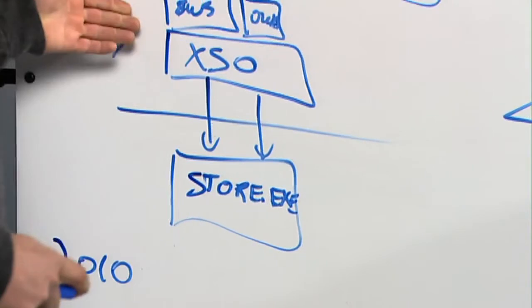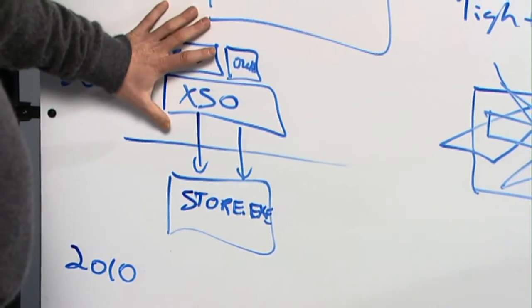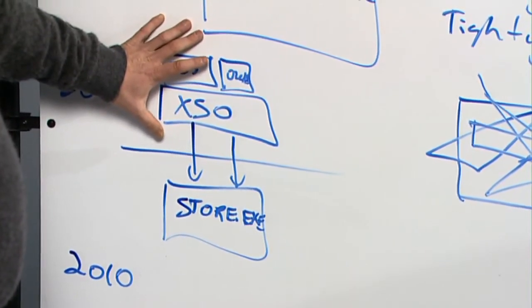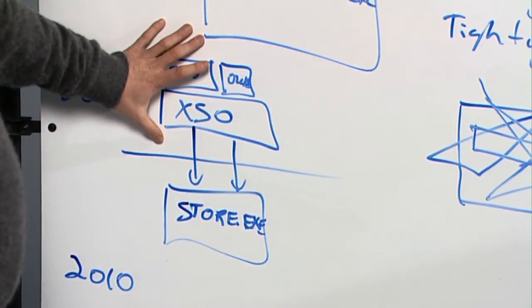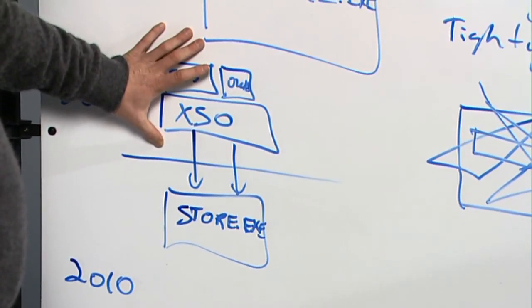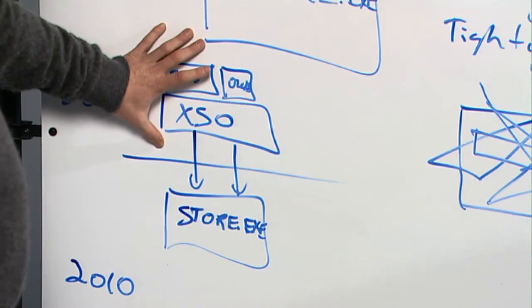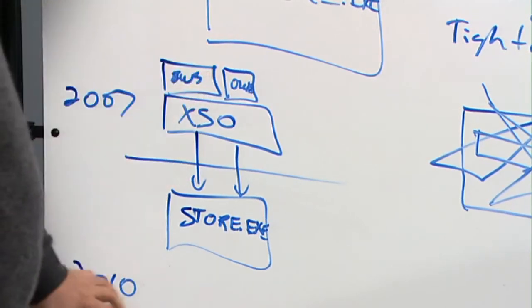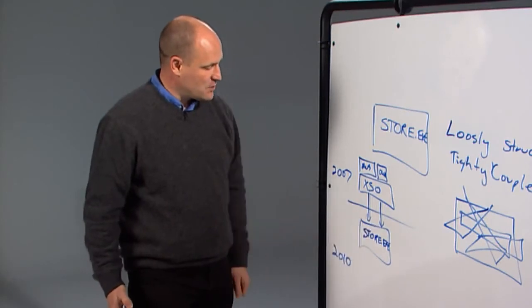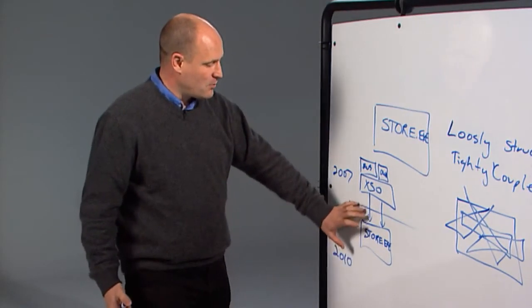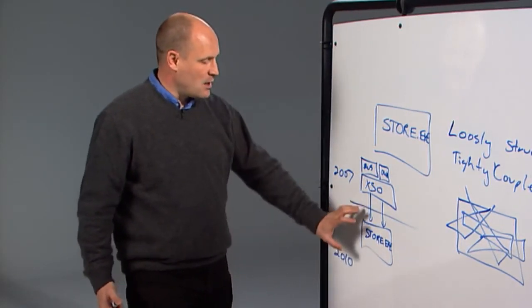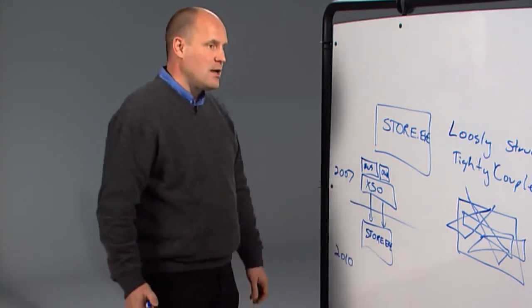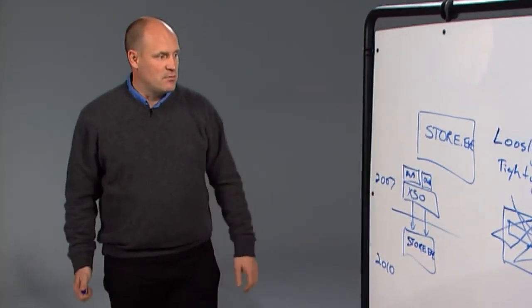By the time we hit Exchange 2010, everything above this line, above store, is managed. We think this gives us long term good performance wins and great productivity wins in terms of being able to introduce innovation faster. In Exchange 15, the release after Exchange 2010, we'll finish this whole program and have replaced our underlying storage engine with a new managed store and finish this three release architecture.